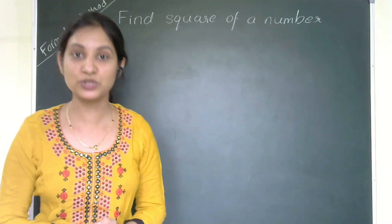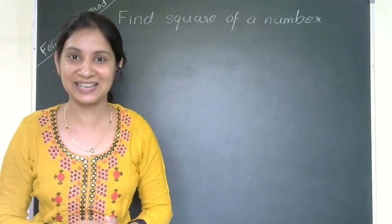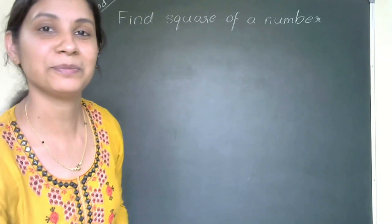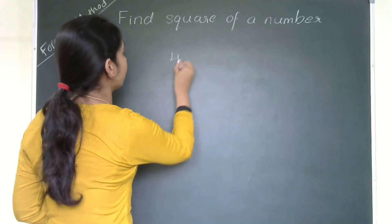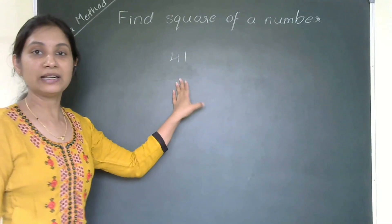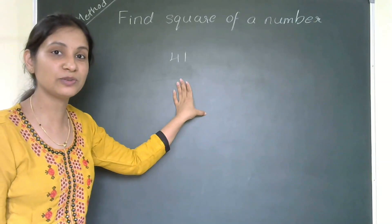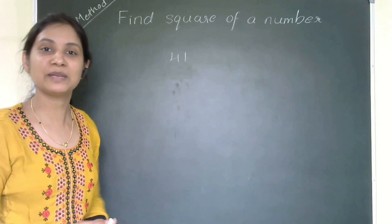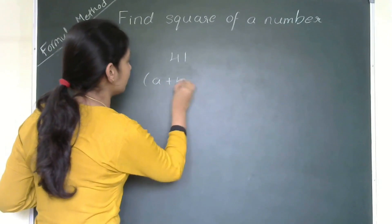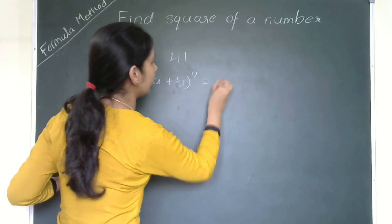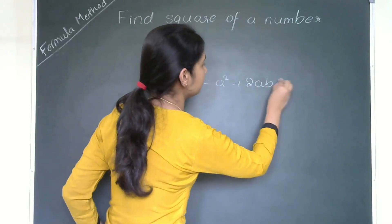So which formula will we use to find the square of any number? You are curious, right? Let us take one example. Here I am taking 41. We need to find out the square of 41 using a formula. Which formula will we use? We know (a + b) whole square — that is, (a + b)² equals a² plus 2ab plus b².